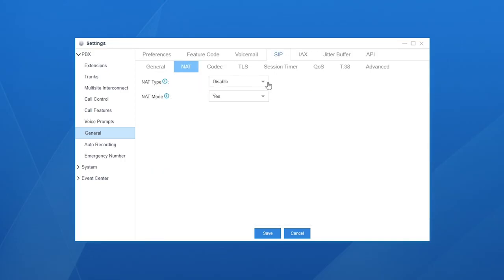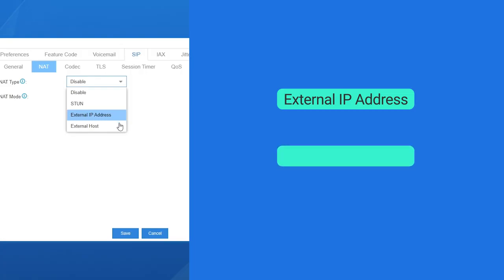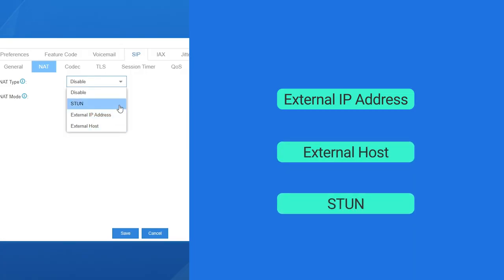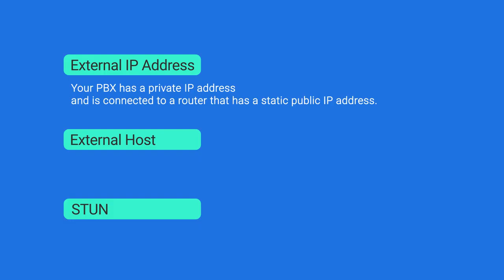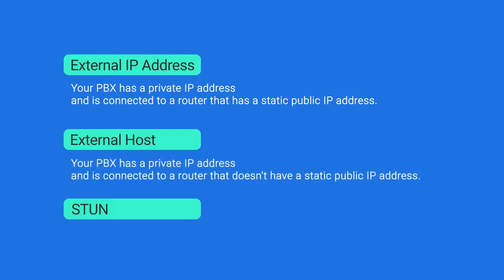Yeastar S-Series PBX provides three types of NAT: External IP Address, External Host, and STUN. If your PBX has a private IP address and is connected to a router with a static IP, use External IP Address. If the router doesn't have a static IP, use External Host. If your PBX has neither a static IP nor a domain name, use STUN.